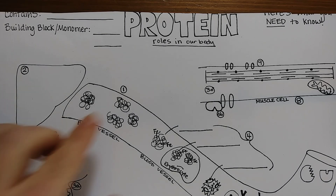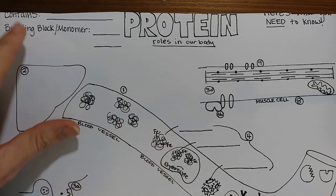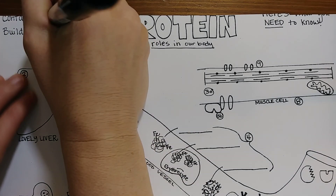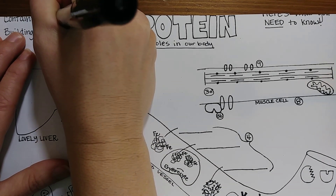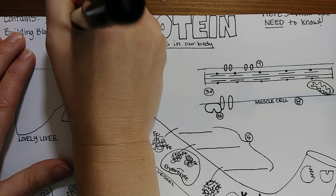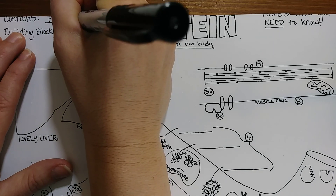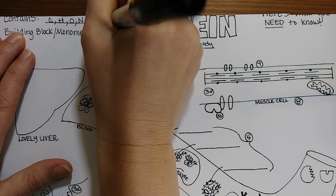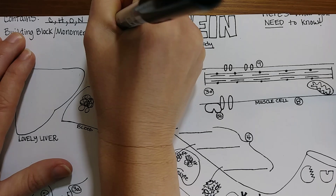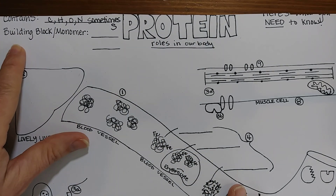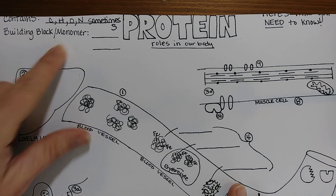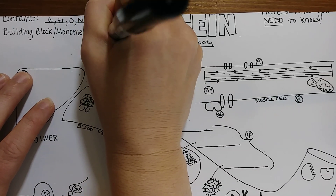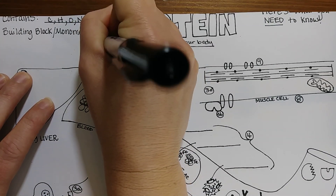When we think about protein, first I want you to think about the elements that it contains: carbon, hydrogen, oxygen, nitrogen, and sometimes sulfur. The building block or monomer of a protein is amino acids, and there are 20 different amino acids.